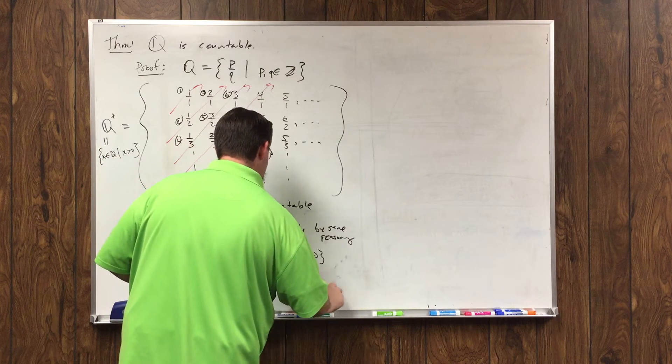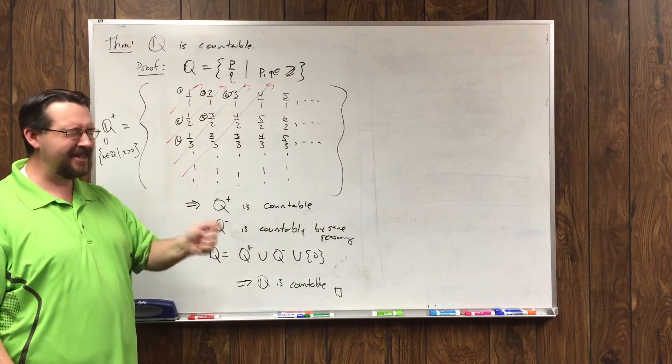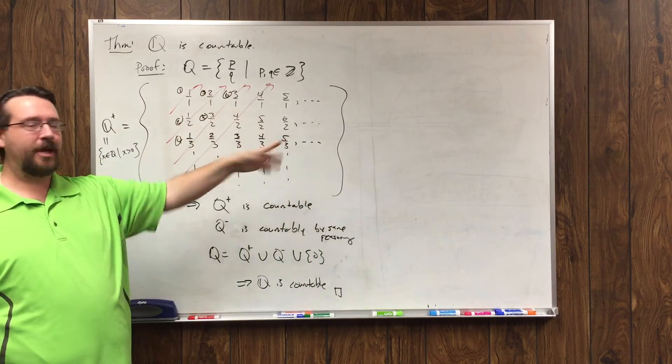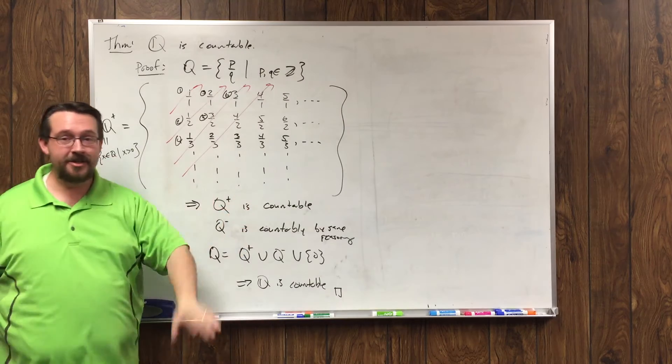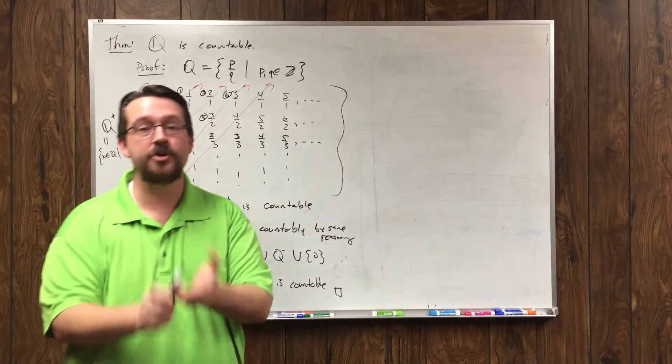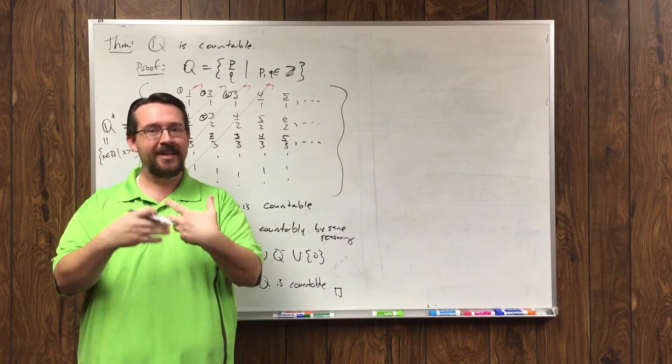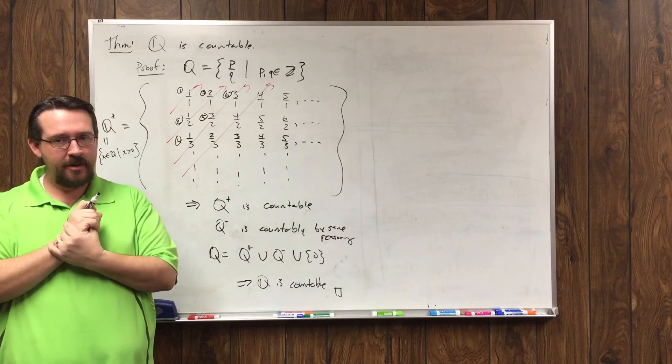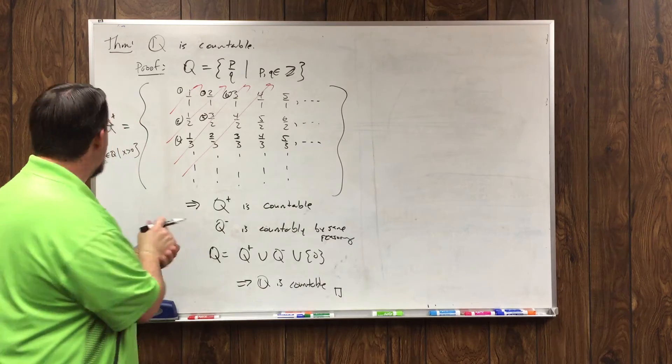But the whole basis of the idea is this diagonalization procedure that hits every element of that set. So natural numbers, integers, rational numbers, all denumerable, countable, countably infinite.